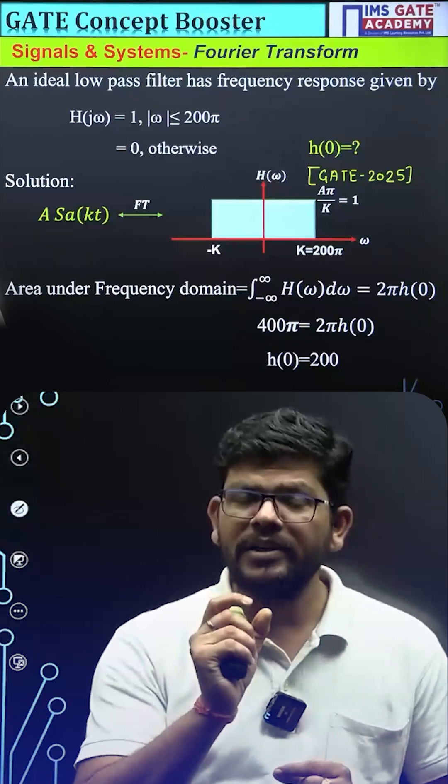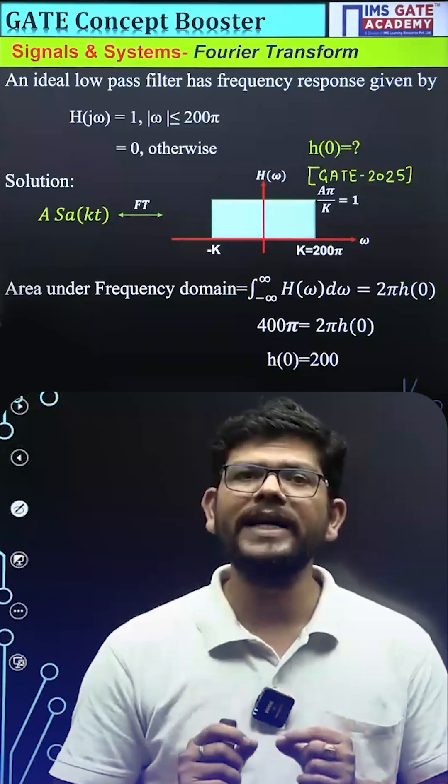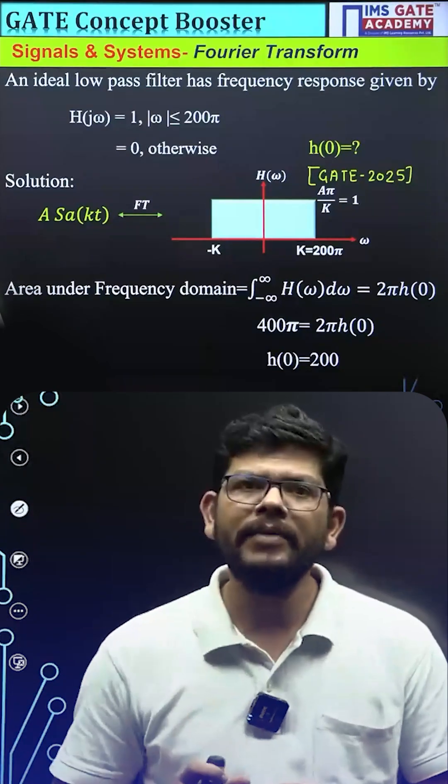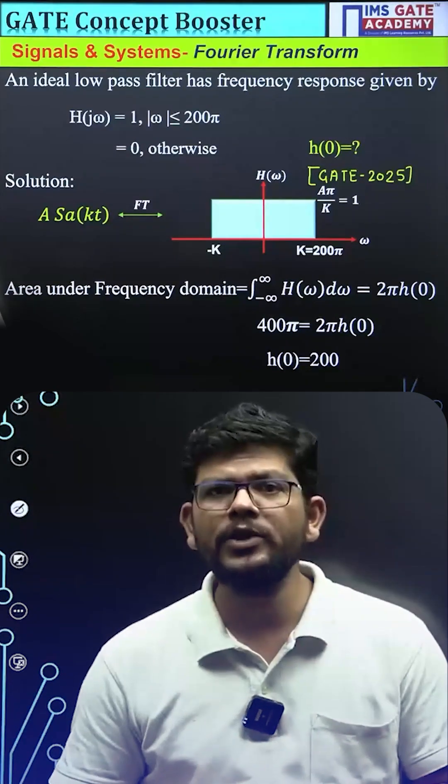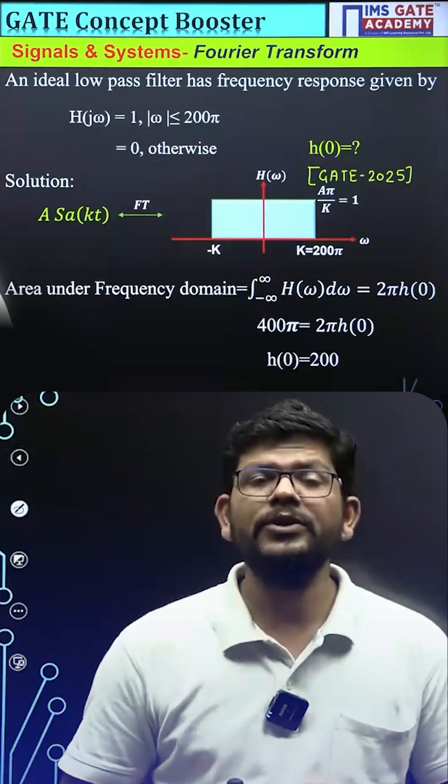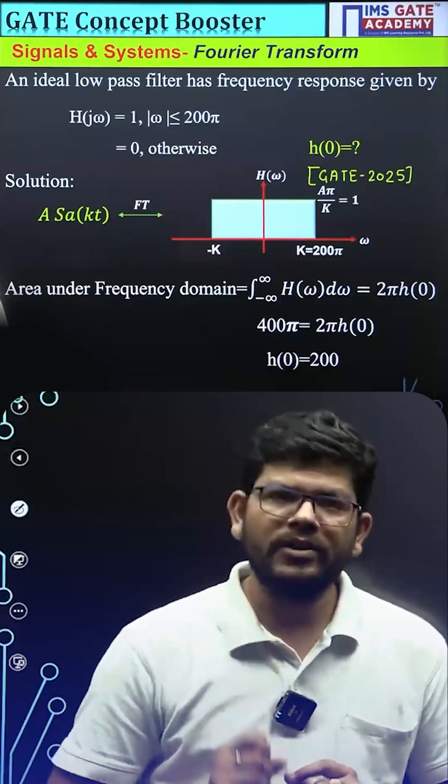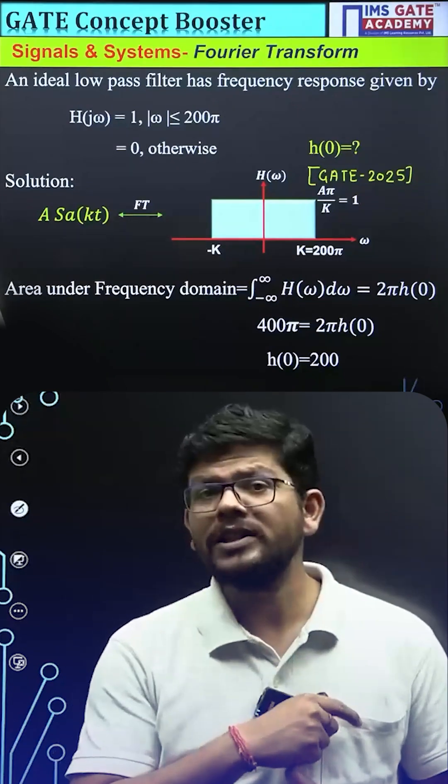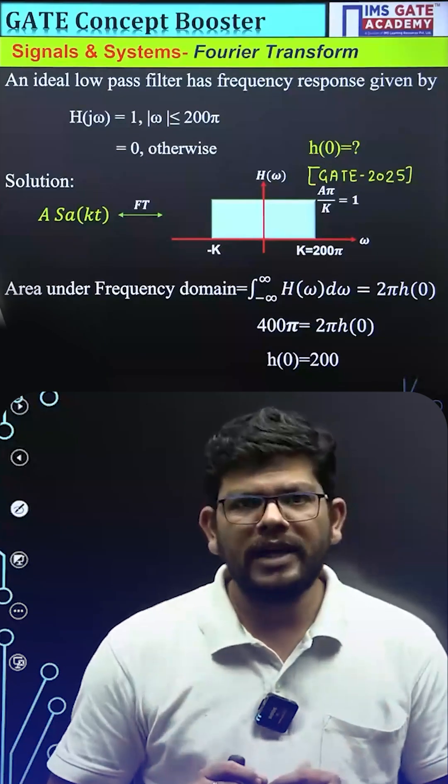So with this particular trick, by remembering the Fourier transform of A sinc(kt) which is a rectangular wave in frequency domain and by remembering the property of area under frequency domain or area under time domain, you can solve a lot of GATE questions. One might be coming in your paper also. So if you have watched this video, you are well prepared for that particular question.